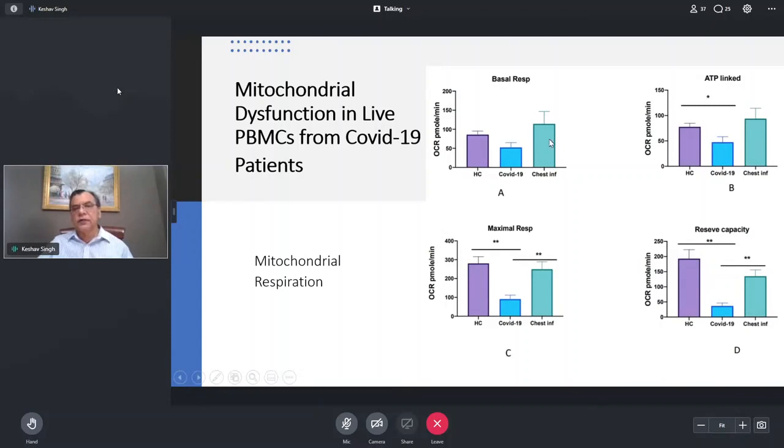So here is the healthy control, here is the COVID-19 and we compare that with patient who had the chest infection that was another control. So if you look at the basal level respiration that was low, ATP-linked respiration was also low and then if you look at the maximal respiration that's also low and the reserve capacity is very very low so it's clearly saying that the infected individuals have mitochondrial dysfunction.